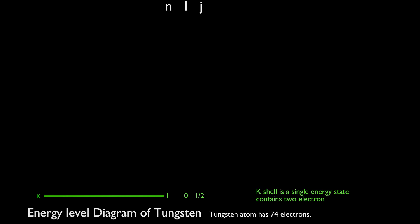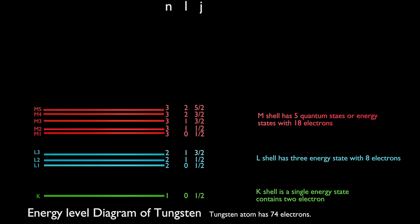K shell is the innermost shell and contains 2 electrons. L shell has 3 energy subshells and contains 8 electrons. M shell has 5 energy subshells with 18 electrons.